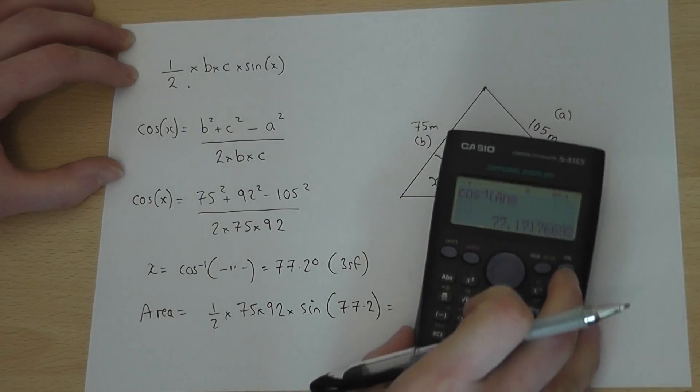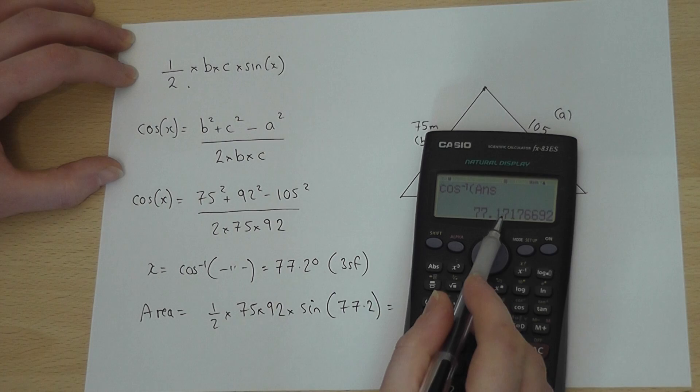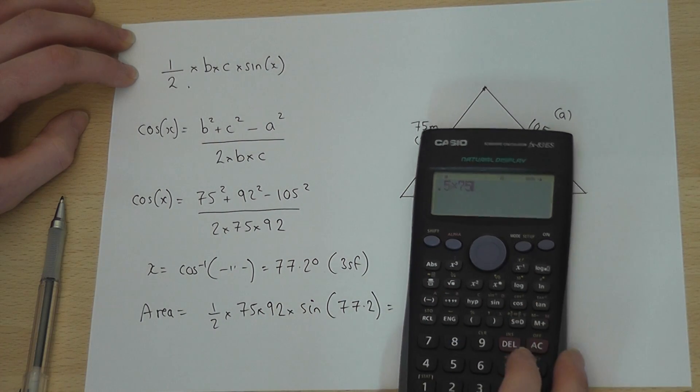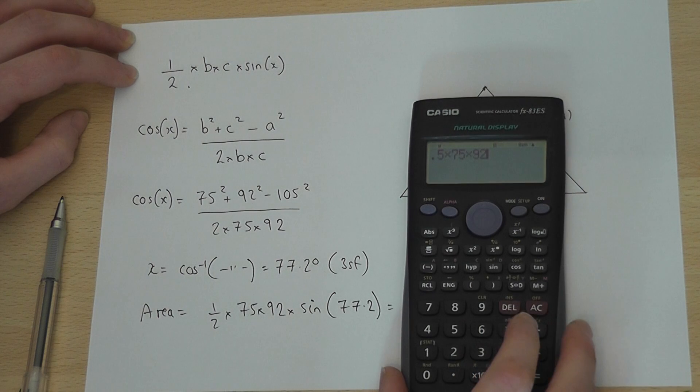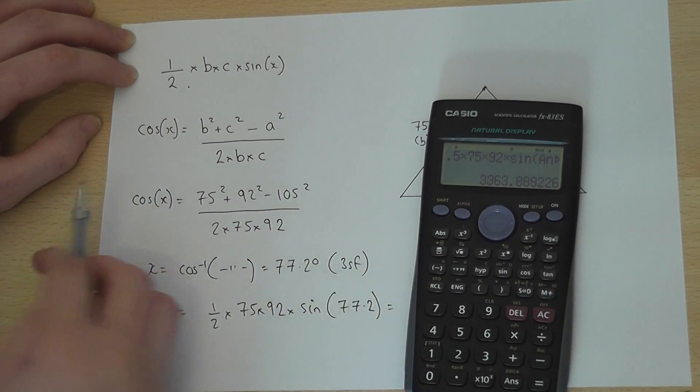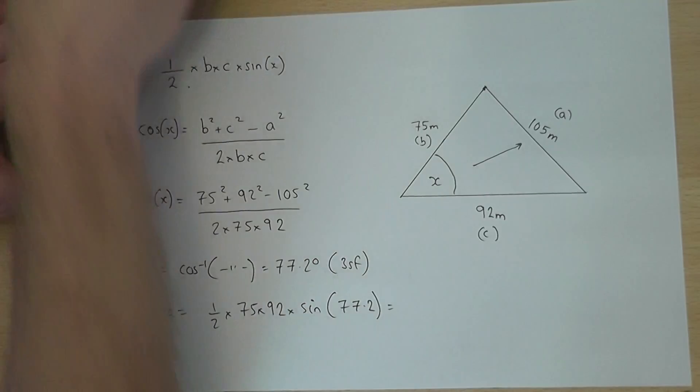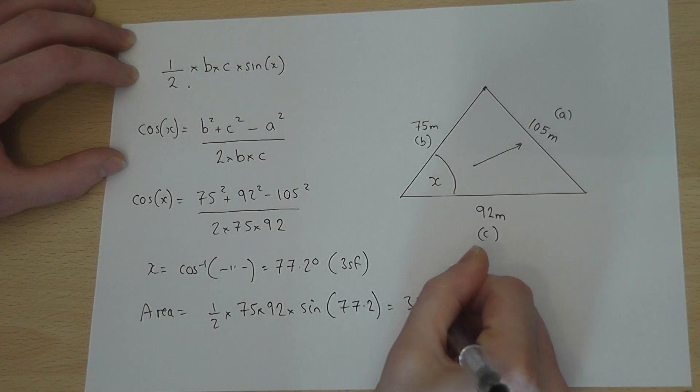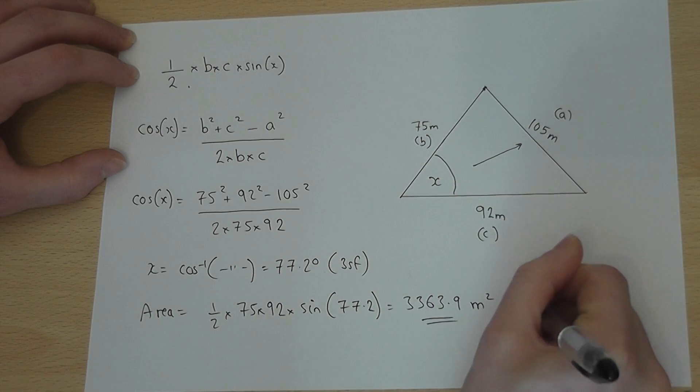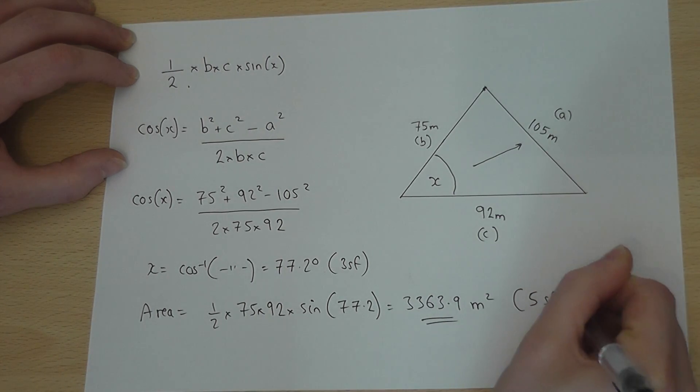So I have the angle stored here accurately. So 0.5 times 75 times 92 times sine of the previous angle. Press Enter, and I get 3363.9. So 3363.9 metres squared to 5 significant figures.